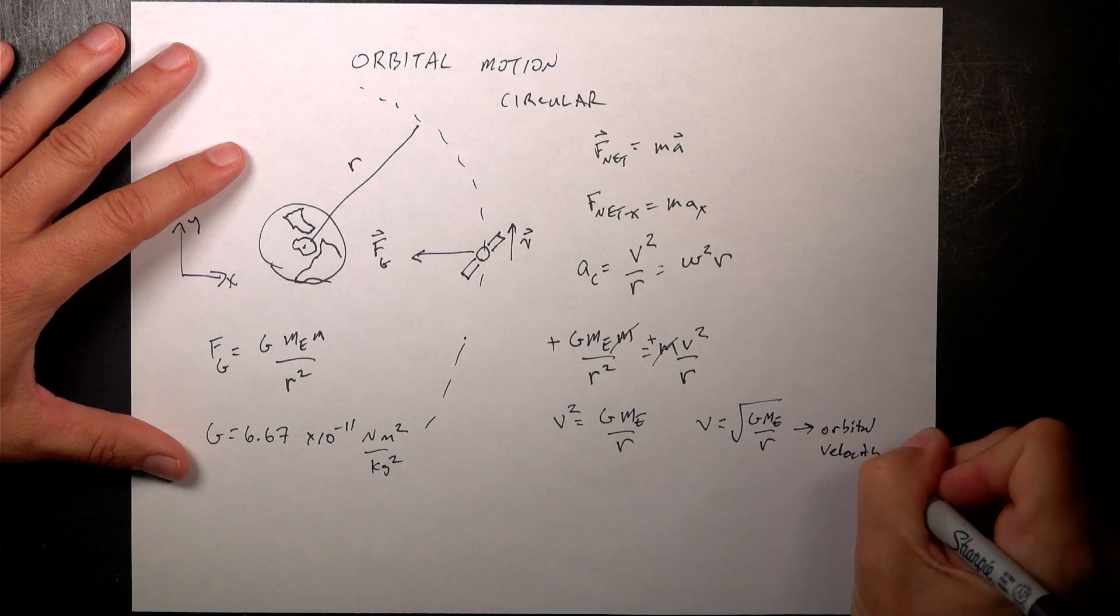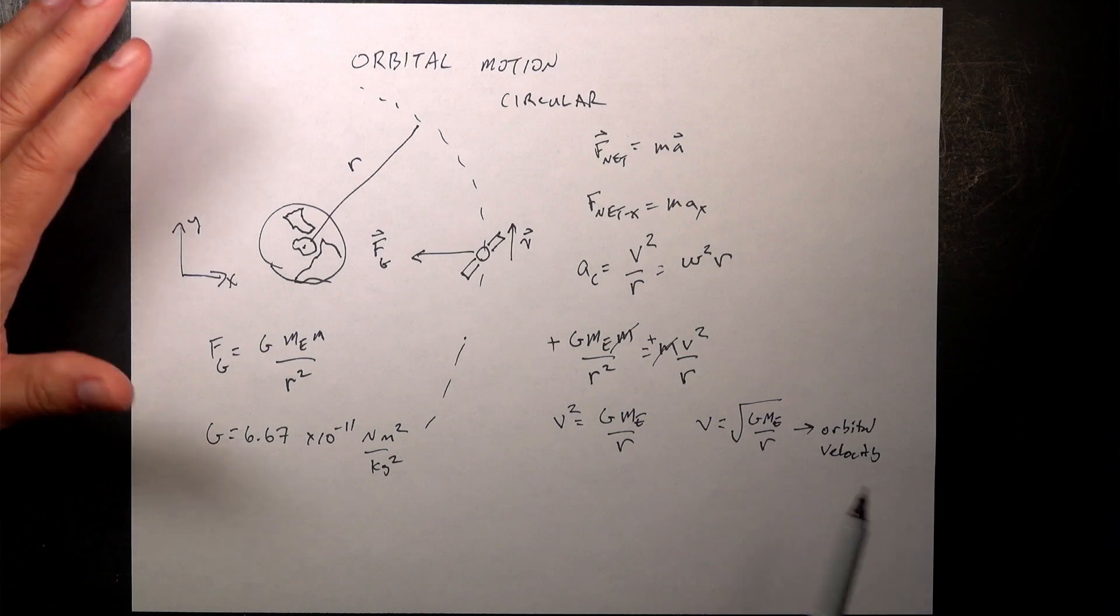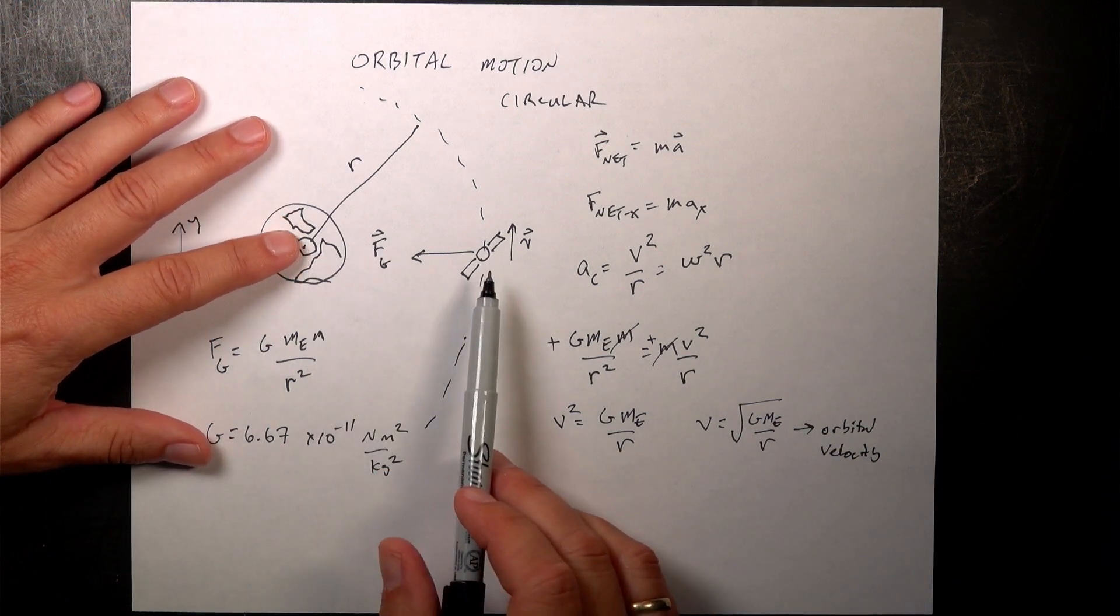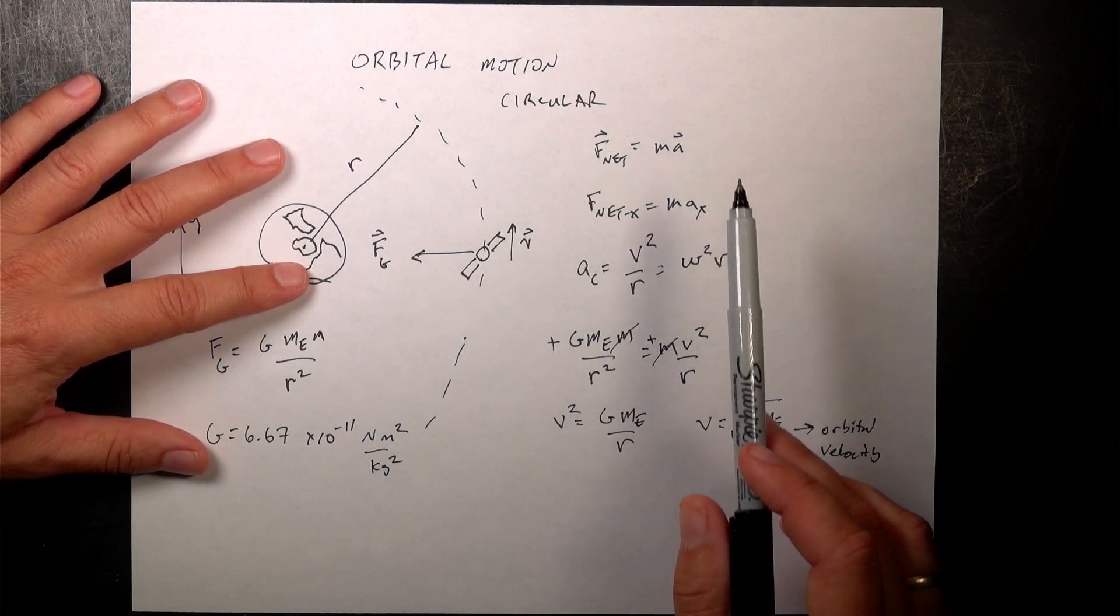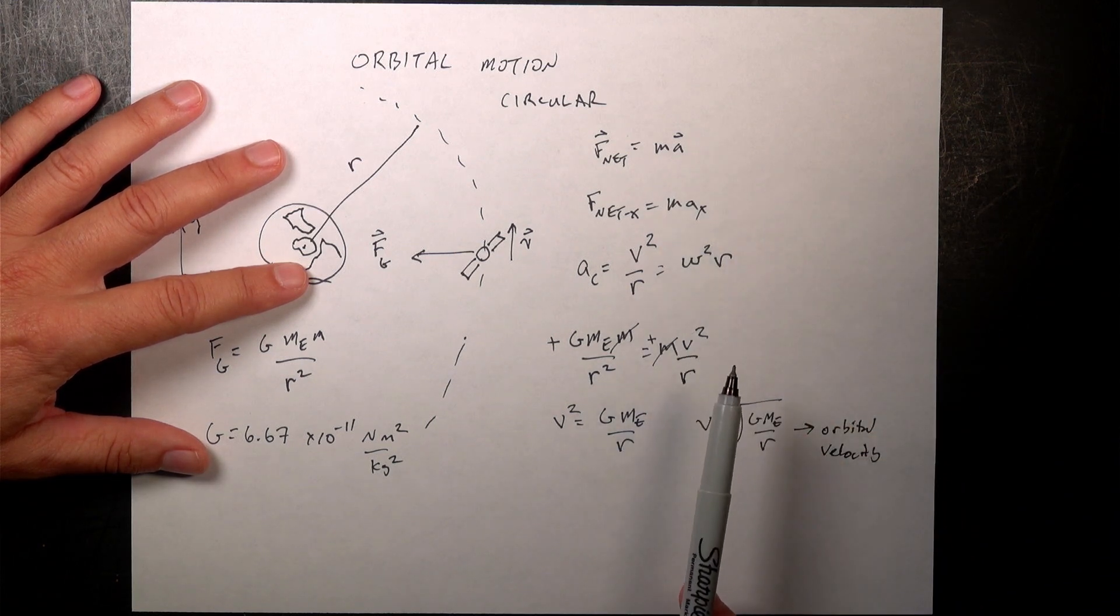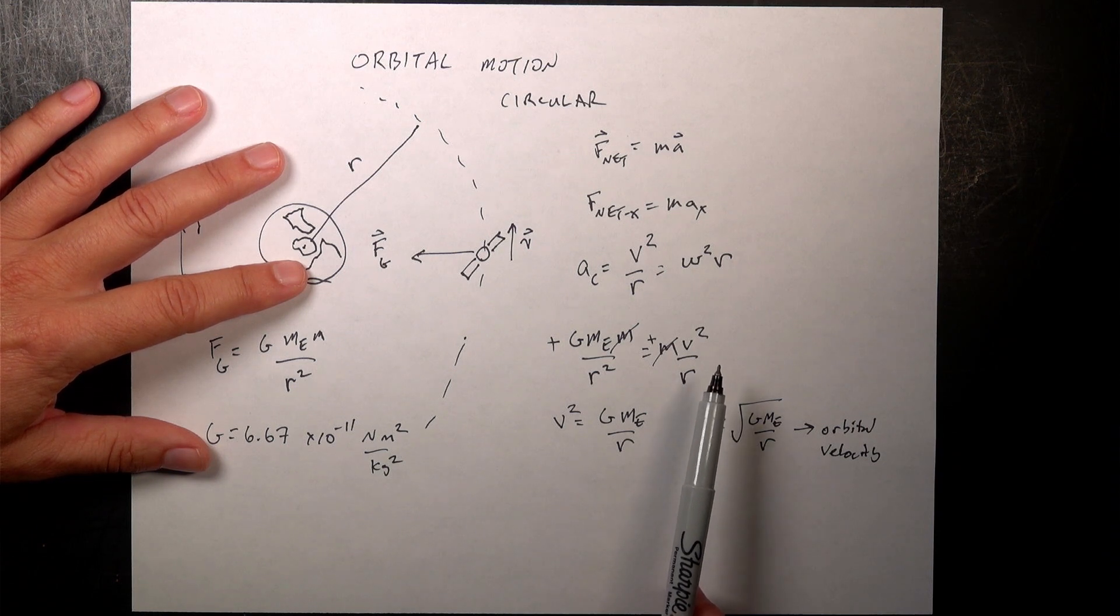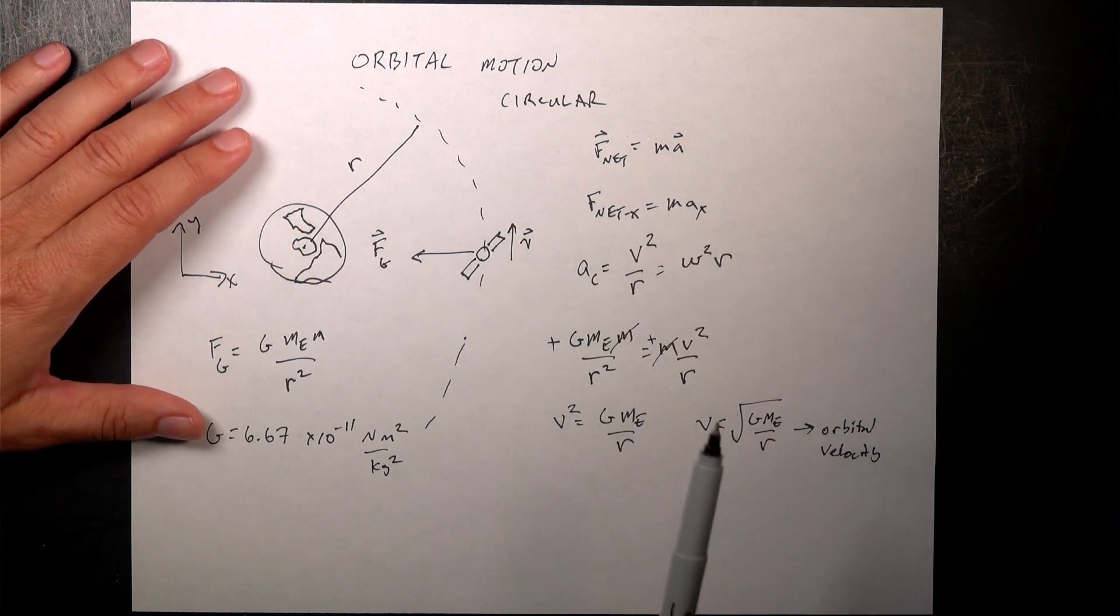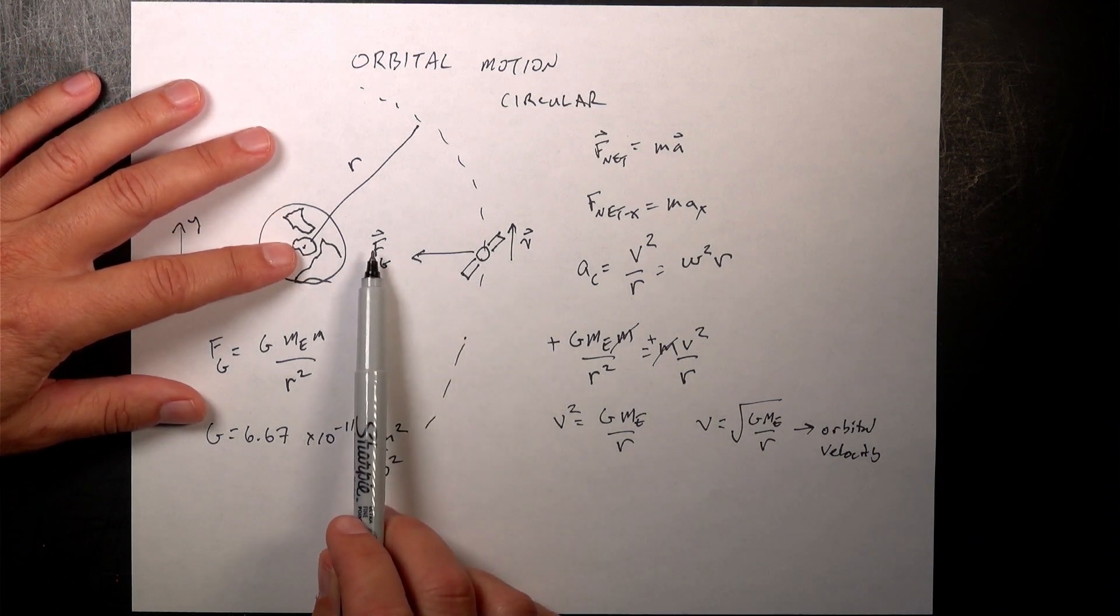But notice what this says. This says that you have to go faster if the planet has more mass. That makes sense. But as you get further and further away, you don't have to go as fast. And that's because if I'm over here orbiting, I'm moving in a circle, the acceleration is going to be a lot slower because the radius of curvature is larger. So I don't need as much of a force. And I have less of a force too, right? Because the gravitational force decreases. So in order to make it move in a circle, I don't have to go as fast.